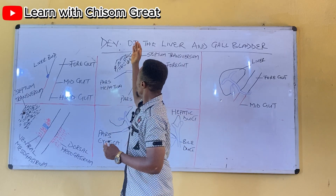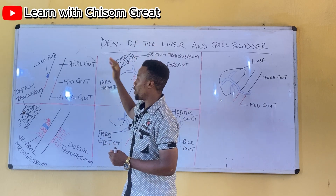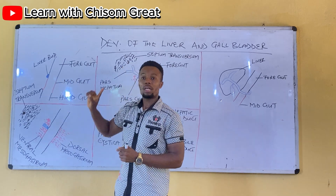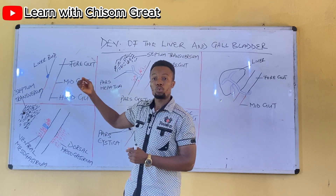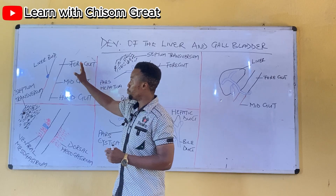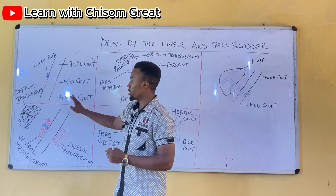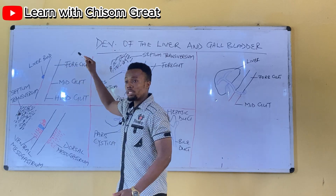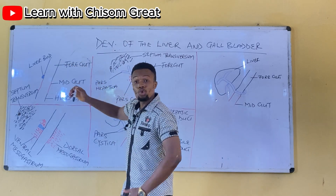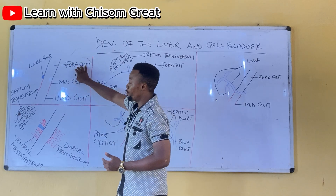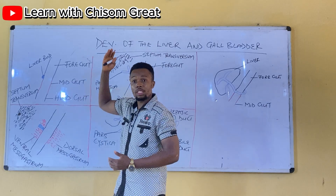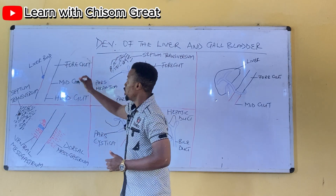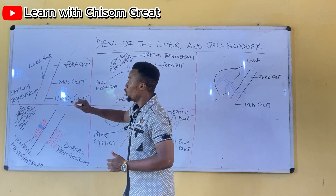The liver and gallbladder develop from the foregut. I decided to start from here so that we understand what we mean by the foregut, the midgut, and the hindgut. The liver develops from the foregut. Structures that develop from the foregut include the liver, the pancreas, the duodenum, and the rest of them.